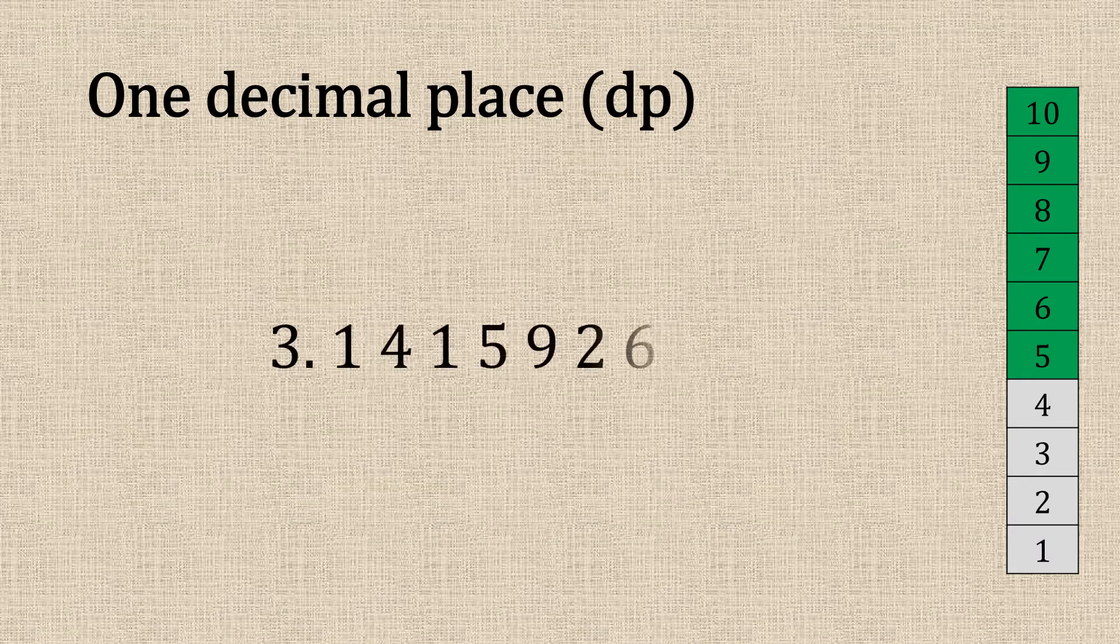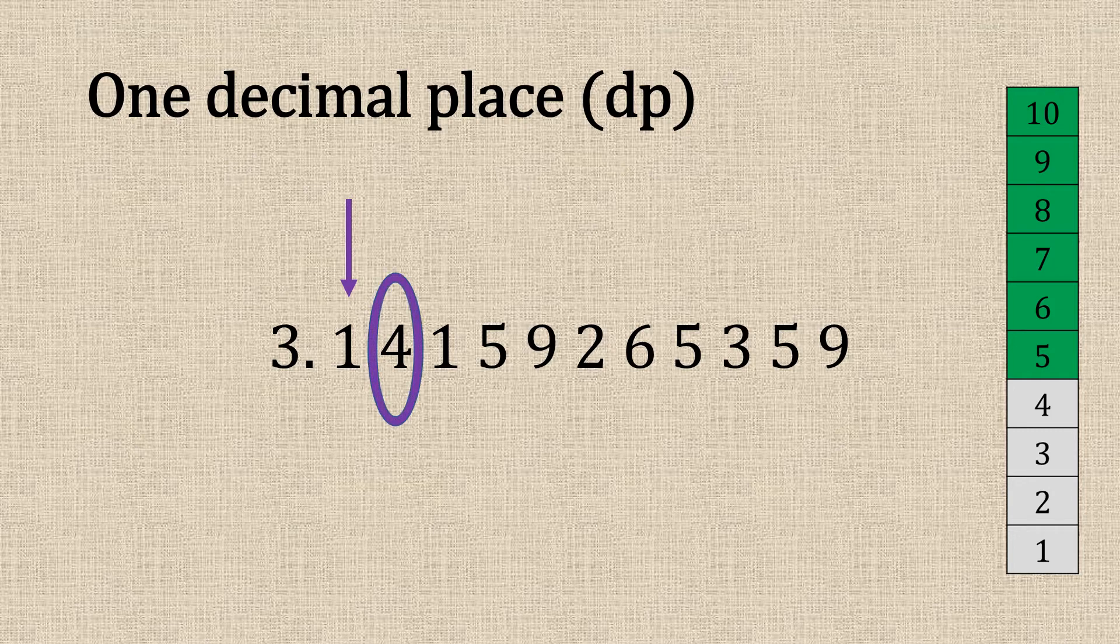One decimal place. There's our long number. Number one is one place after the decimal. The neighbour is four. As we know it's below so we let it go. We leave it as it is.